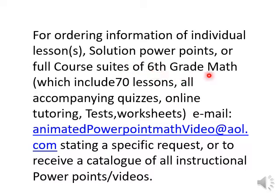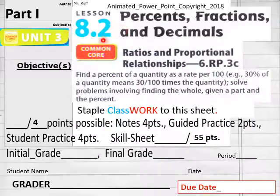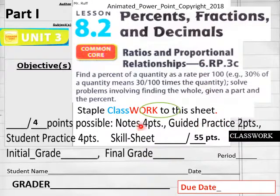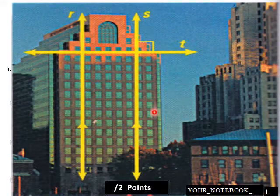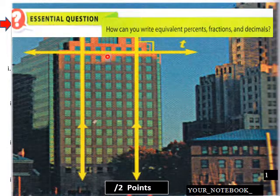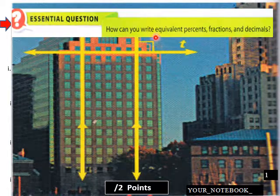Hello everybody, getting ready to do sixth grade math 8.2, lesson 8.2 part one. We have a 55 point class worksheet today, then we have a four point notebook sheet today, and we're going to go right into our lesson, no bell work today.